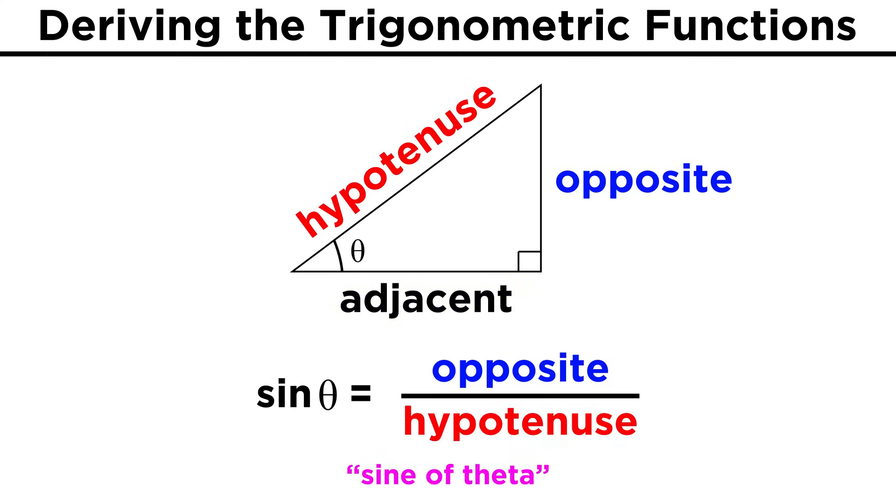We will say that the sine of theta, which is abbreviated this way, SIN, then the theta symbol, will be equal to the length of the leg opposite the angle over the length of the hypotenuse.